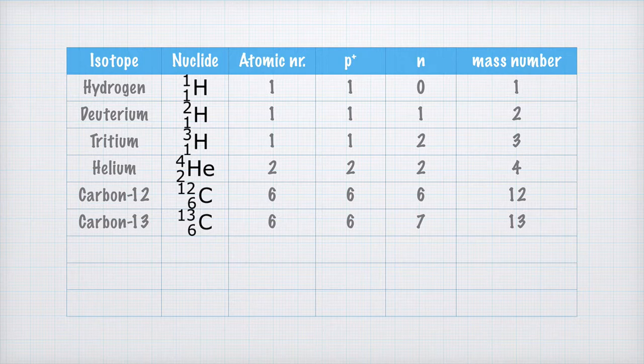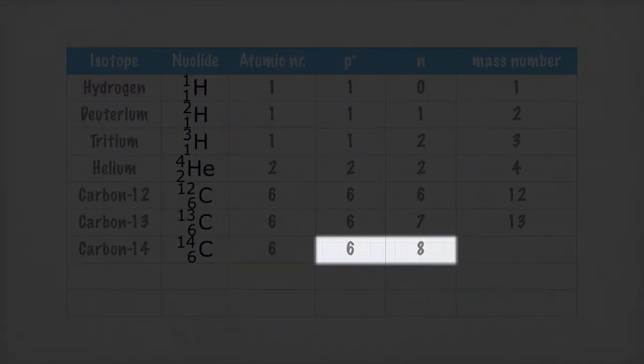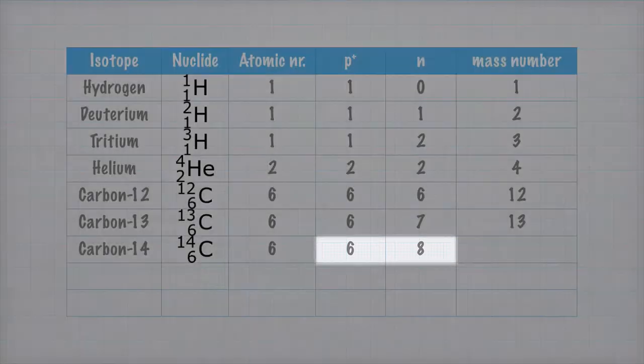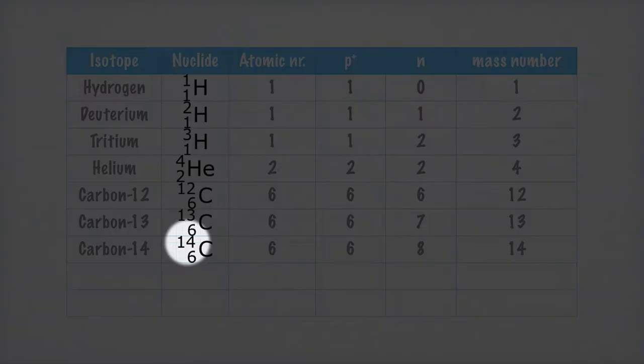There is yet another carbon isotope, and it is carbon-14. Its atomic number is 6, just like the number of protons in its nucleus. The number of neutrons is 8, which we know because 6 plus 8 equals 14, which is the mass number.